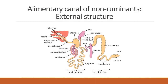The structure of non-ruminants is different from ruminants. The main difference between the two is the stomachs. Ruminants have four stomachs, while non-ruminants have what we call a true stomach. The alimentary canal of a pig — which is a non-ruminant — contains the mouth, esophagus, stomach, small intestine, and large intestine. It does not have a rumen, reticulum, omasum, or abomasum.